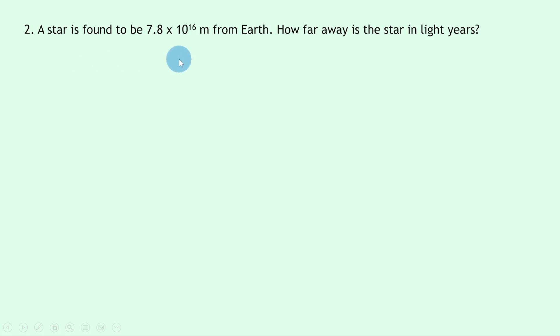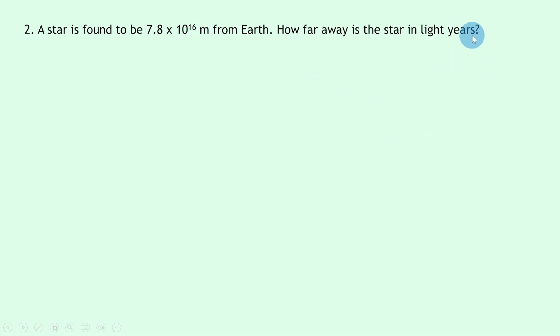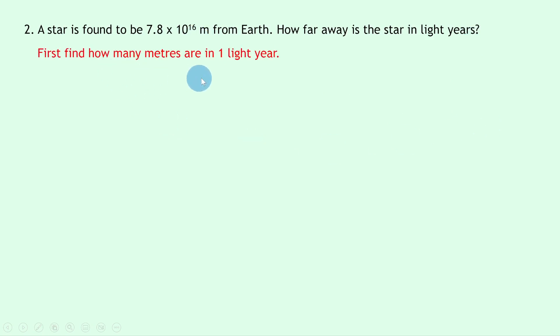Question two says: a star is found to be 7.8×10¹⁶ meters from earth. How far away is the star in light years? This time we want to convert from meters into light years, so we want a smaller number, which means we're going to divide in the end.